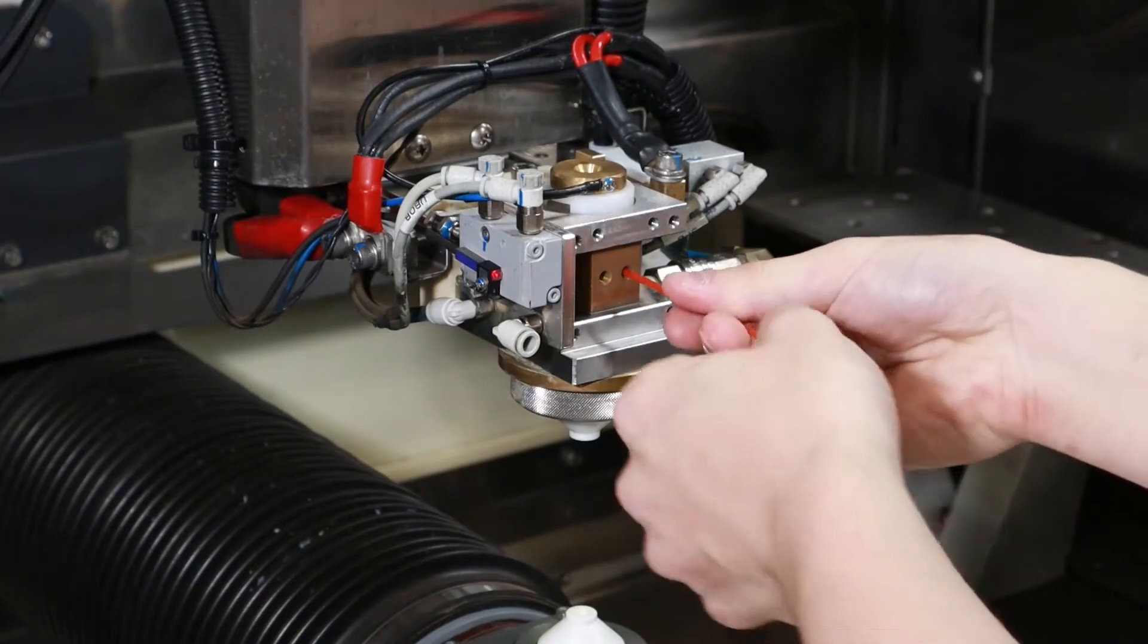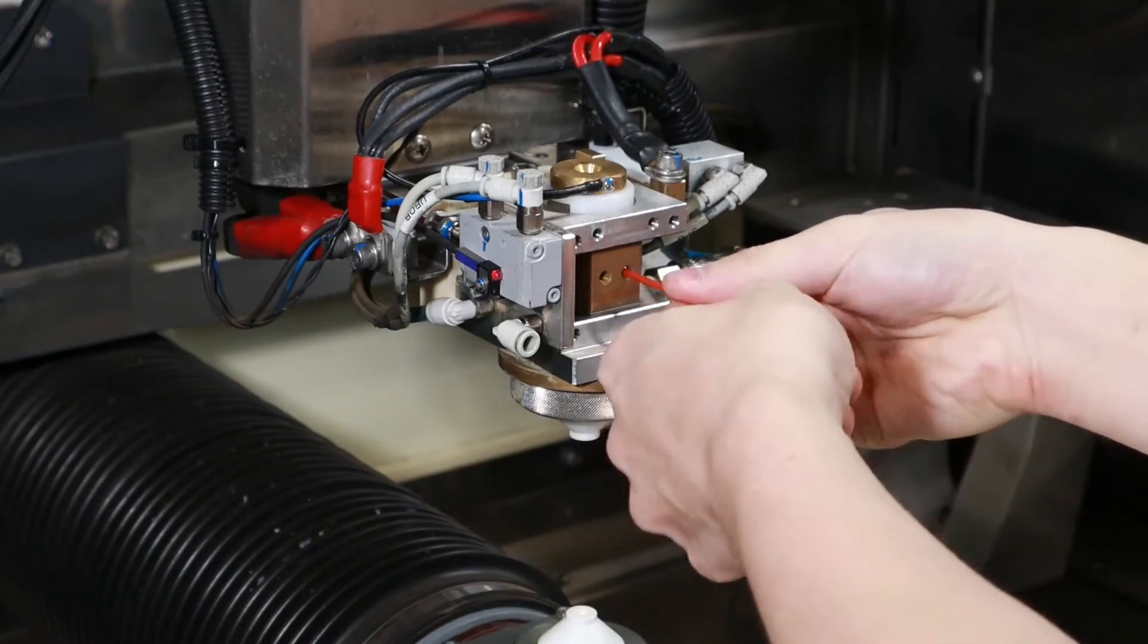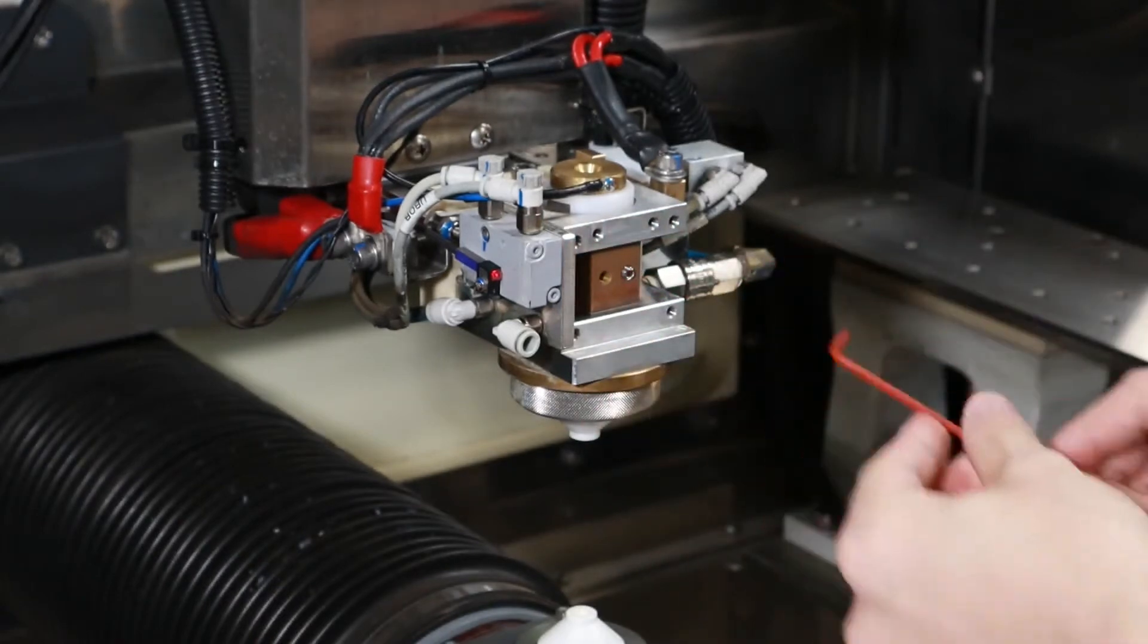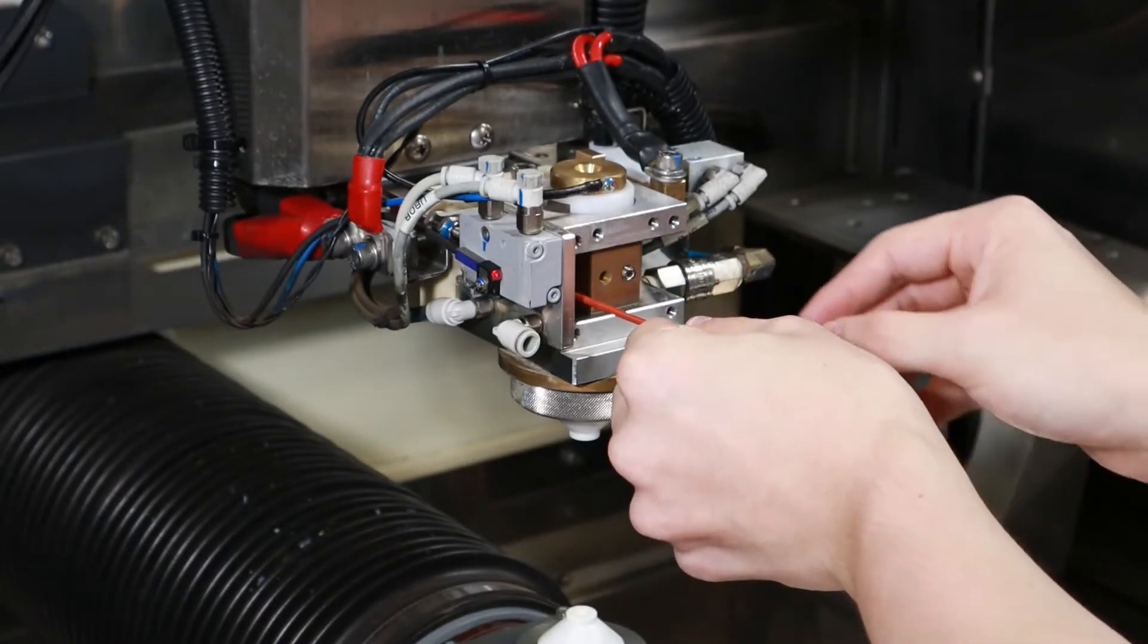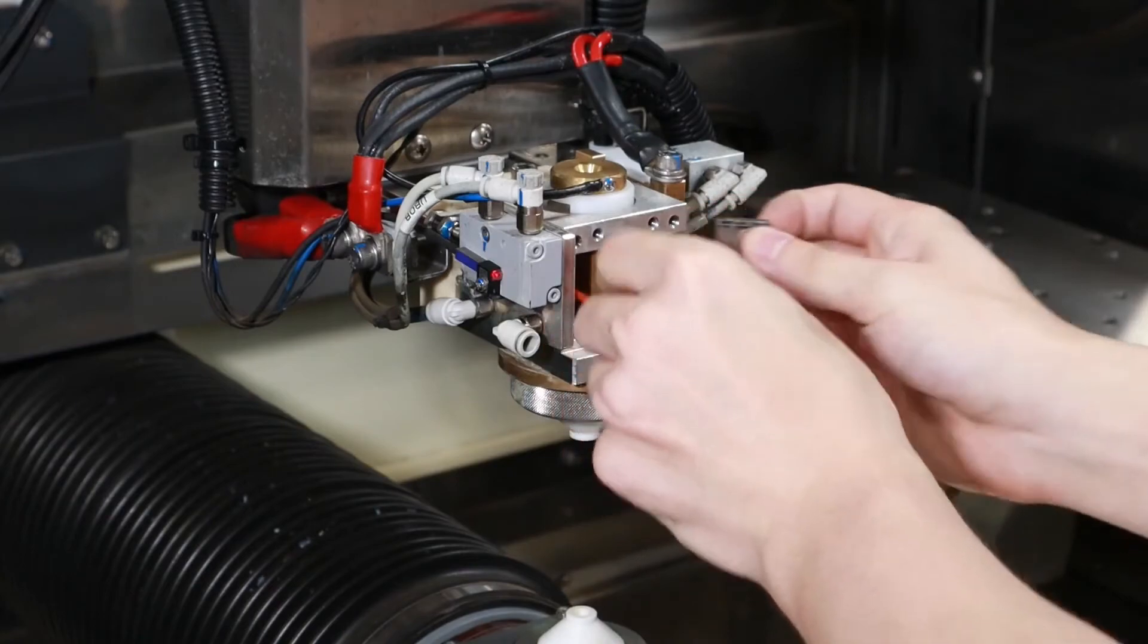I'll just take my Allen wrench, loosen up the set screw, and that should allow me to take out the carbide contact.